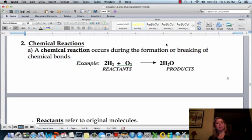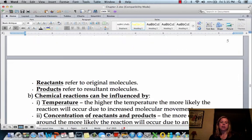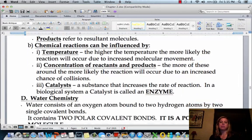In this video we're going to talk about chemical reactions, how they happen, and then we're going to get into a little bit of water chemistry because water chemistry is going to be huge in biological systems. So a chemical reaction consists of reactants and products. The reactants are what you put into the reaction and the products are what you end up with.